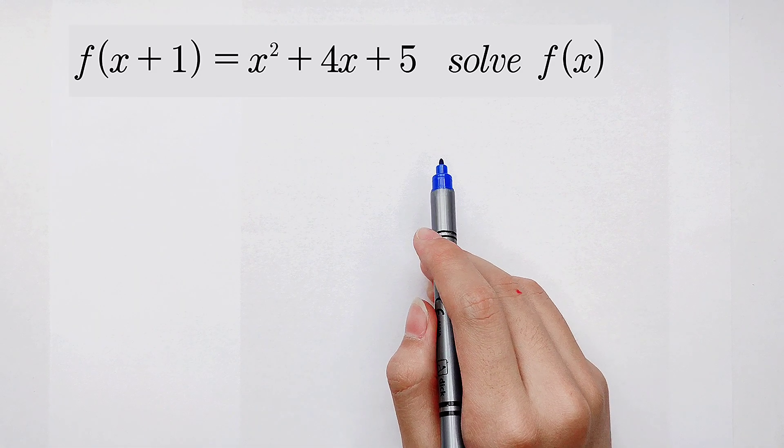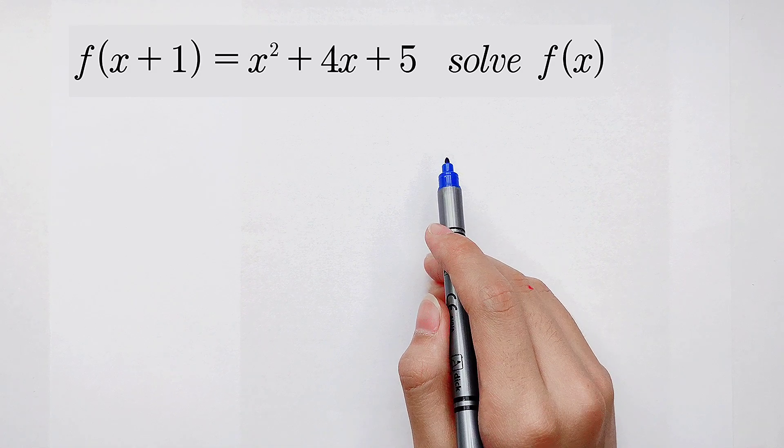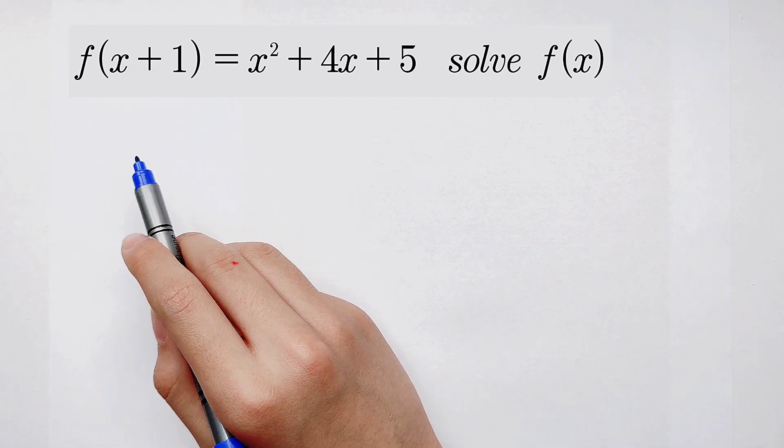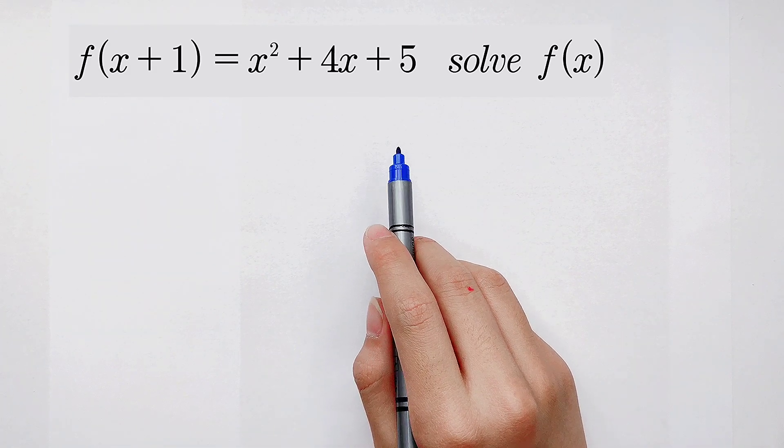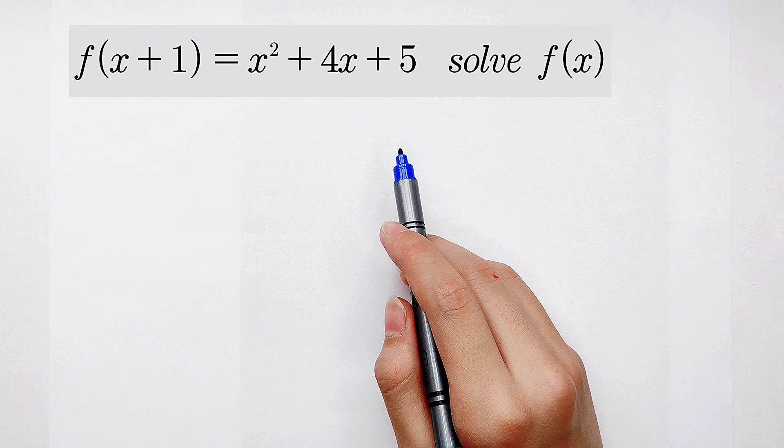How can we solve this problem? First, you have to pay attention, and then I'll ask you, what's in the bracket? It is x plus 1. But are there any x plus 1 on the right side? No. So what should we do?